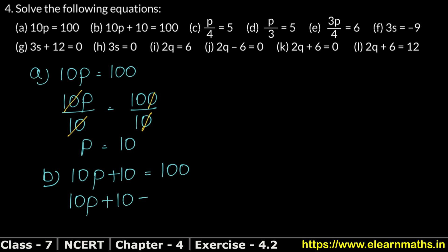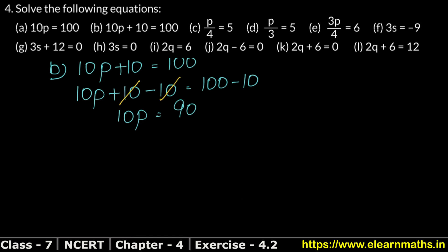We subtract 10 from both sides: plus 10 minus 10 cancels, and from 100 we subtract 10 to get 90. So 10p equals 90. Now p is multiplied by 10, so we divide both sides by 10. This gives us 90 divided by 10.